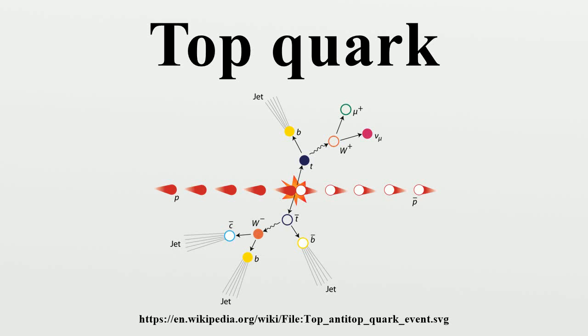The top quark, also known as the T-quark or truth quark, is the most massive of all observed elementary particles. Like all quarks, the top quark is an elementary fermion with spin-1/2 and experiences all four fundamental interactions: gravitation, electromagnetism, weak interactions, and strong interactions. It has an electric charge of plus two-thirds e.